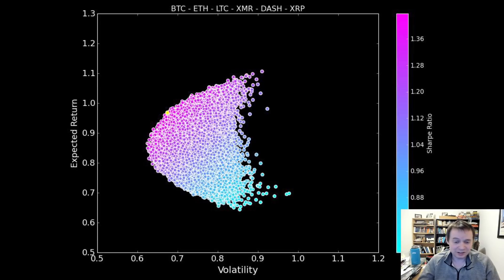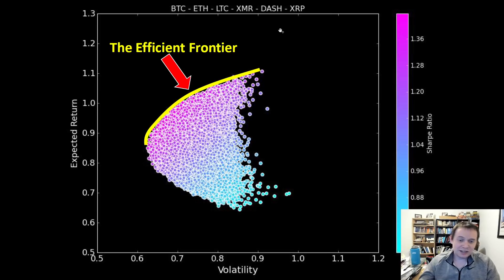The way this works is every dot you see on this chart is in fact a portfolio with various weightings of Bitcoin, Ethereum, Litecoin, Monero, Dash, and XRP.